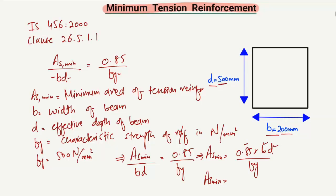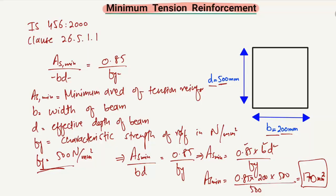We are using 500 grade steel, so fy = 500. The calculation is: 0.85 × 200 × 500 / 500, which gives us 170 mm². This is the minimum area of tension reinforcement that should be provided in this beam.